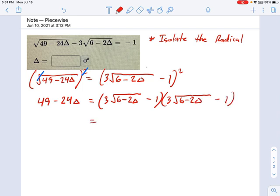So that's another 3 radical 6 minus 2 delta minus 1. Okay, and I'm just going to skip through this a little more quickly than in the past. That's going to be 9 times 6 minus 2 delta minus 6 square root of 6 minus 2 delta plus 1. Okay, and the left side hasn't changed.